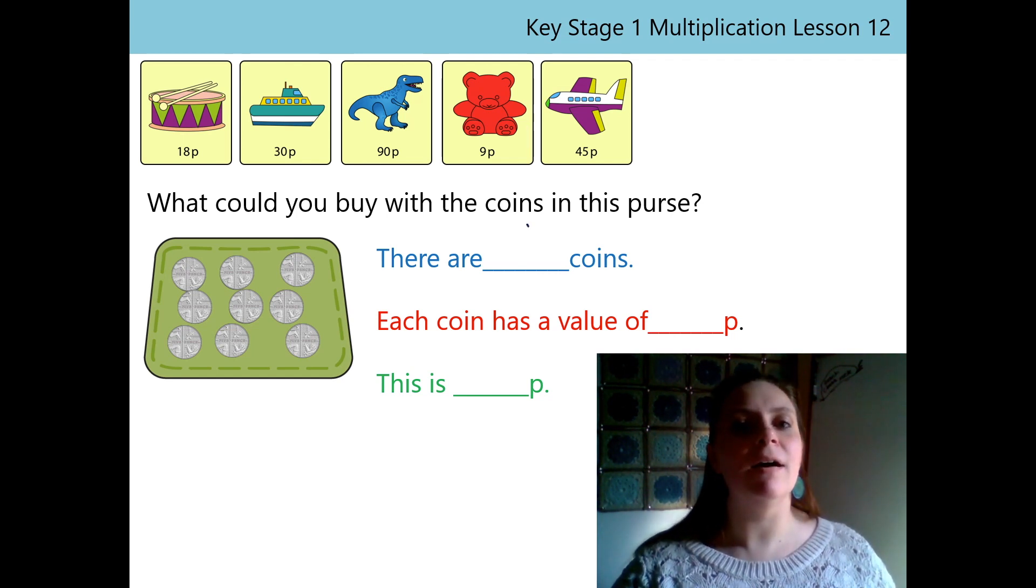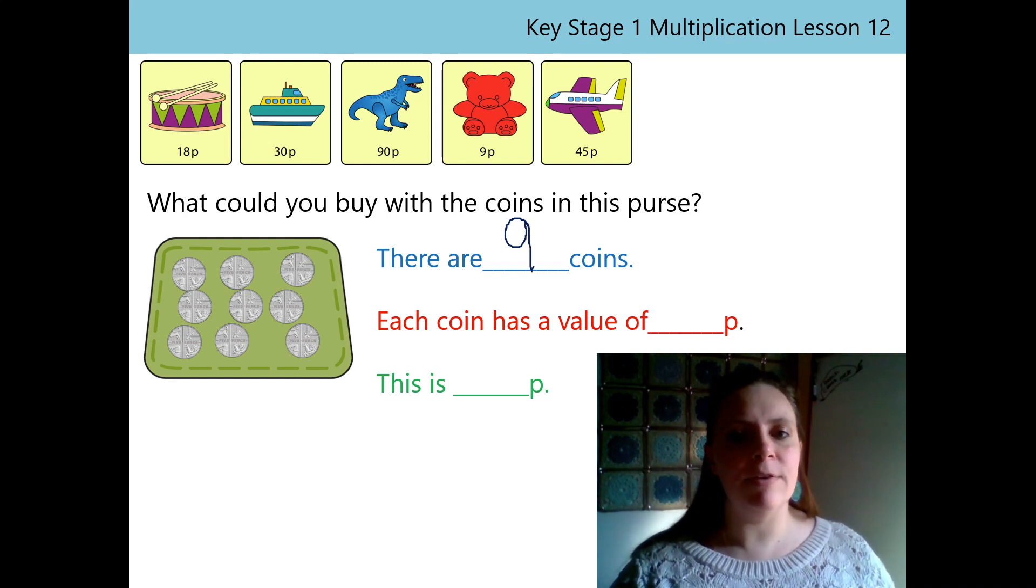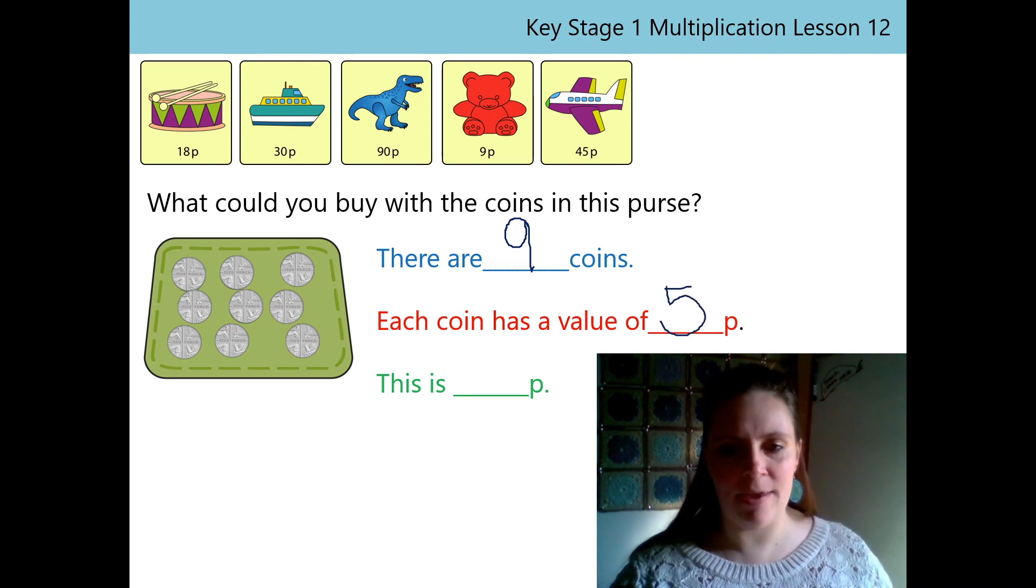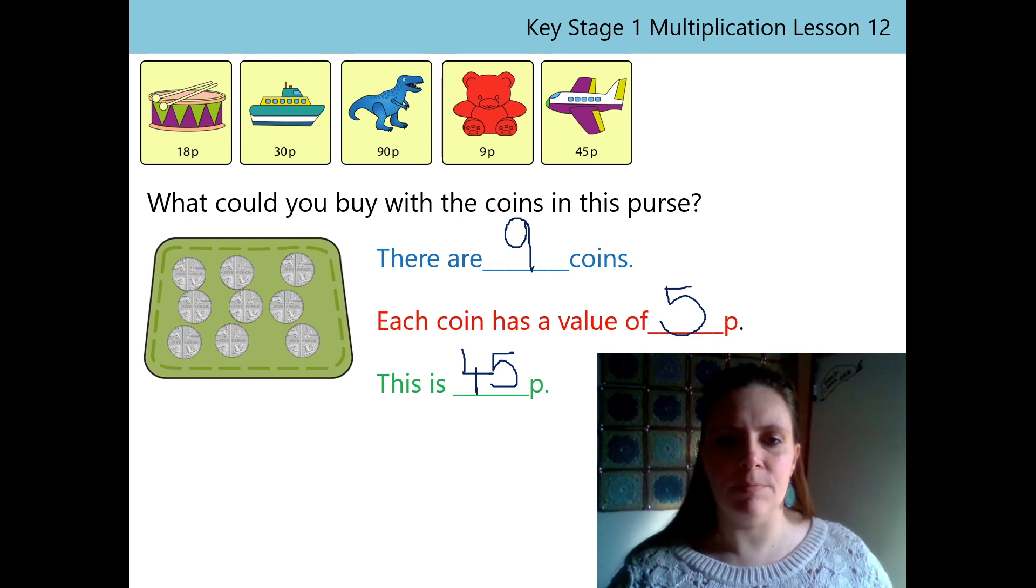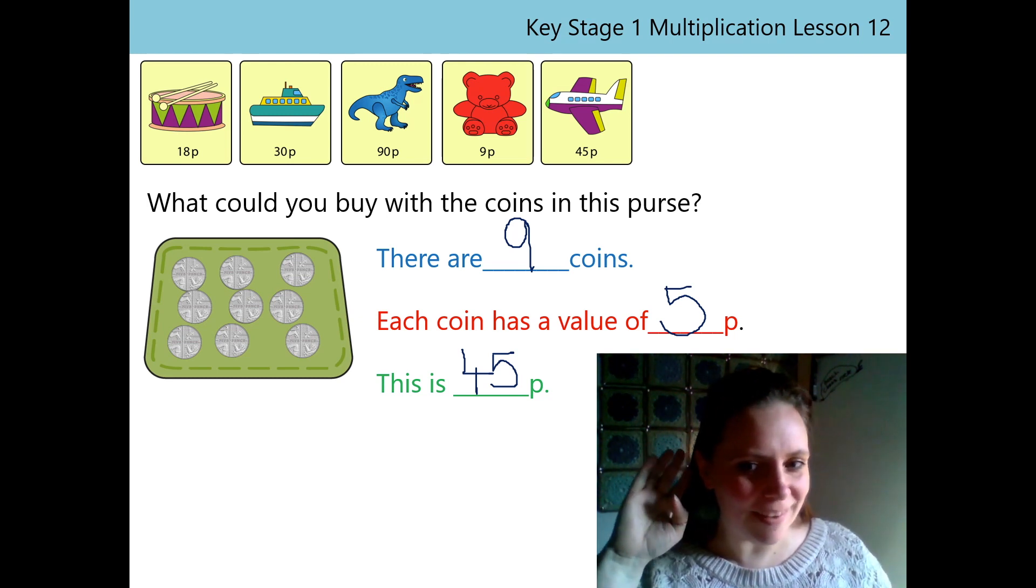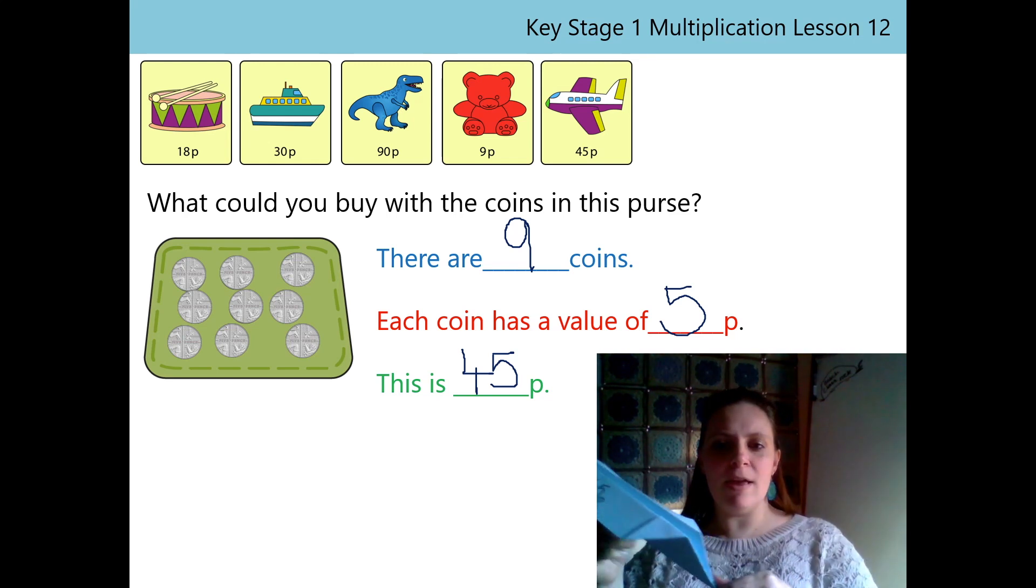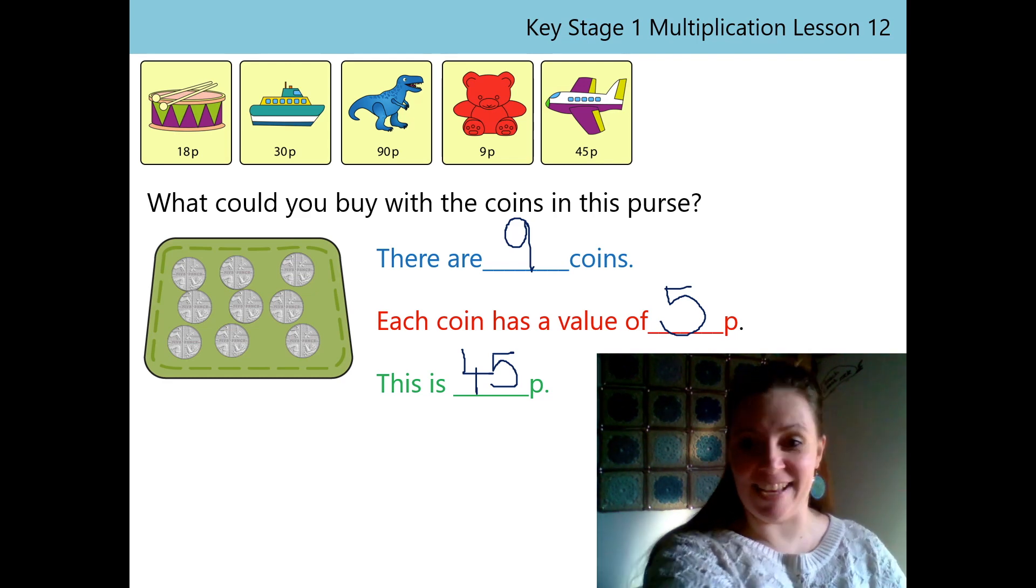I think maybe you know what we could buy already with the coins in this purse. But let's just pop everything into our stem sentences. There are 9 coins. That's right. We counted them, didn't we? Each coin has a value of 5p. Thank you very much. This is 45p. Will you just say all these sentences for me? Brilliant. And I bet you know what we can buy now. What is it? That's right. It's the aeroplane for 45p. Thanks for your help again.